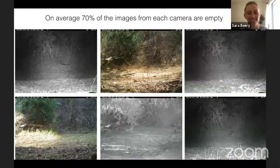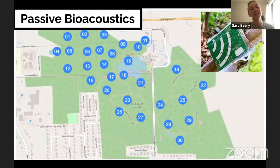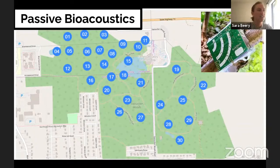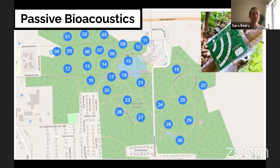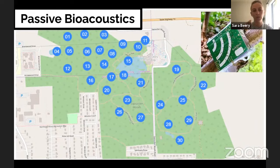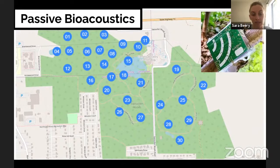A lot of the images are empty for camera traps. This low sample efficiency, site-specific backgrounds, and site-specific distributions — this is not unique to camera traps. Here is a set of passive bioacoustic sensors placed around Cornell near the Cornell Lab of Ornithology. These are being used to study bird calls.